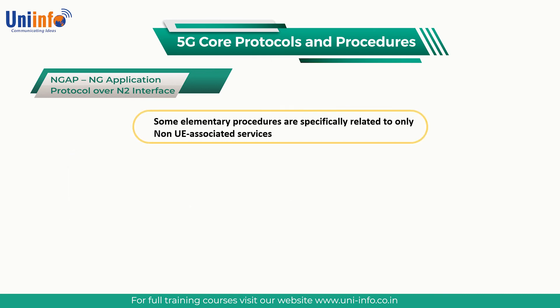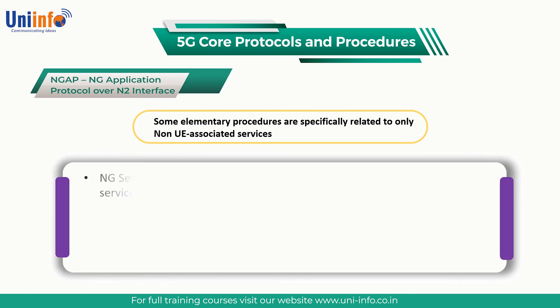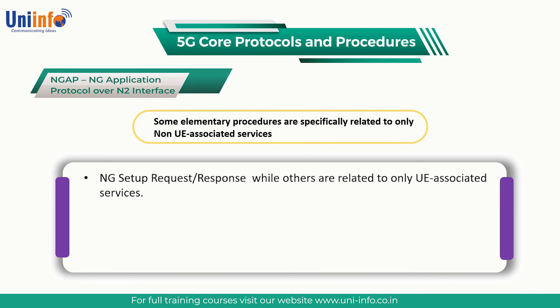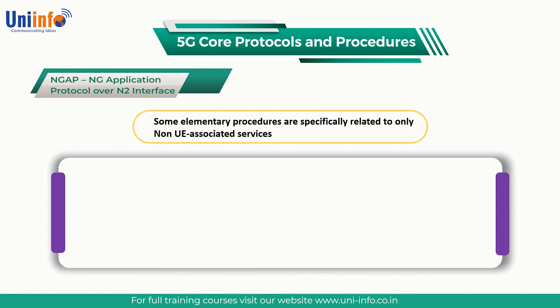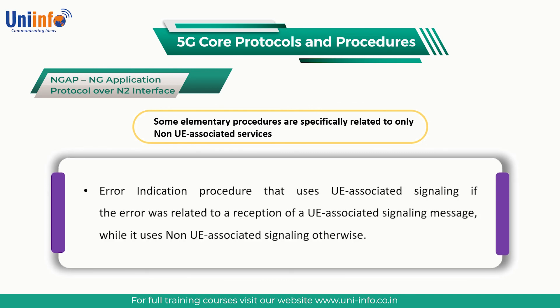Some elementary procedures are specifically related to only non-UE associated services, for example, NG setup request or response, while others are related to only UE-associated services, for example, PDU session establishment. There are also some elementary procedures that may use either non-UE associated or UE-associated signaling depending on the scope and context. For example, the error indication procedure uses UE-associated signaling if the error was related to reception of a UE-associated signaling message, while it uses non-UE-associated signaling otherwise.